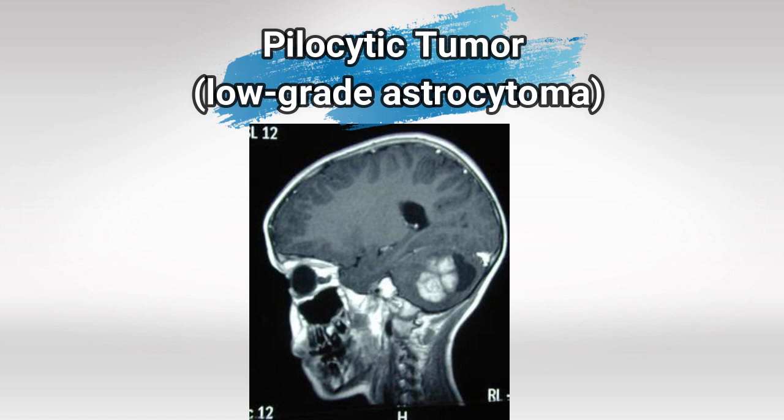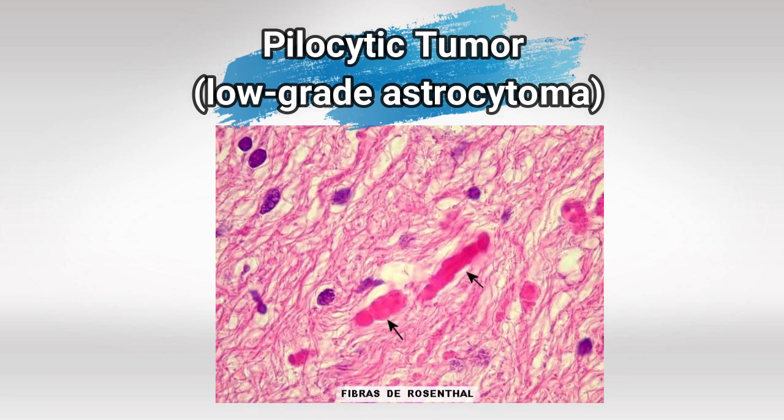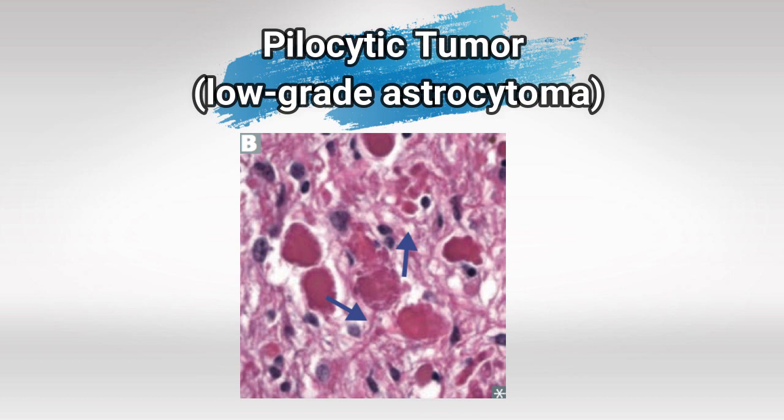Here you can see the pilocytic tumor in the posterior fossa in the cerebellum. Here are the Rosenthal fibers — they're basically rod-shaped eosinophilic fibers — and here are the corkscrew fibers.